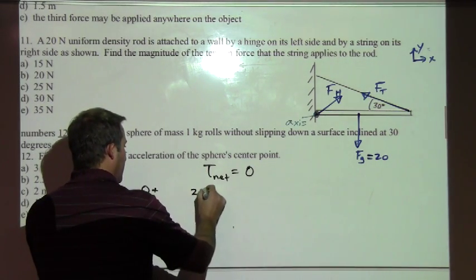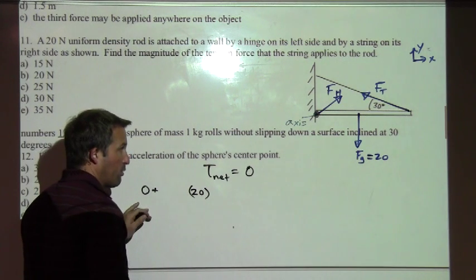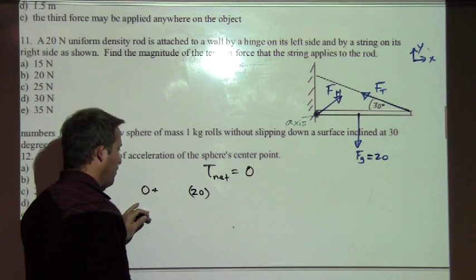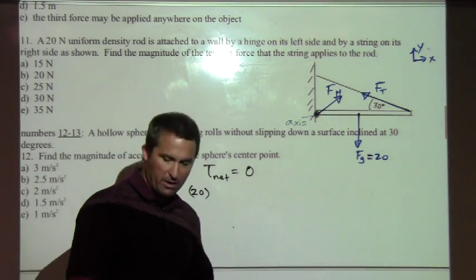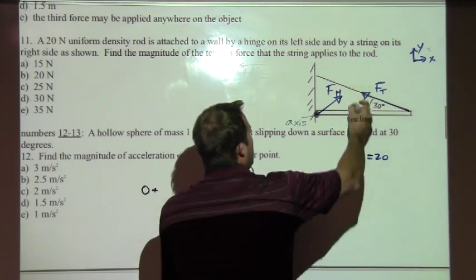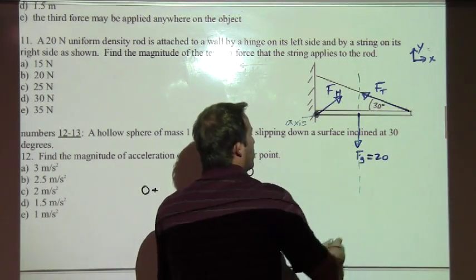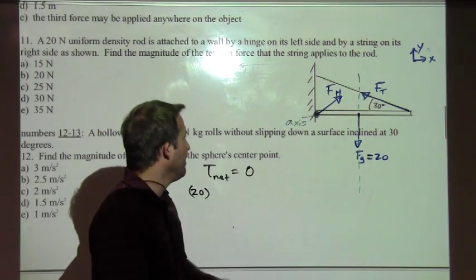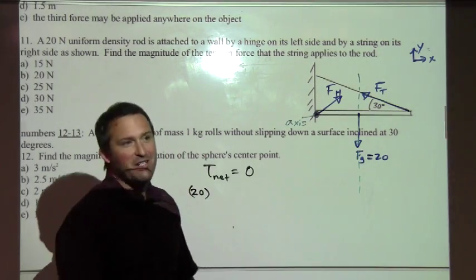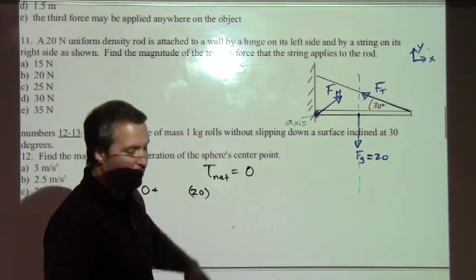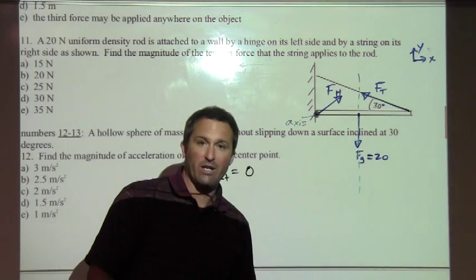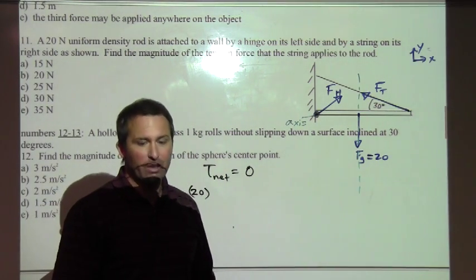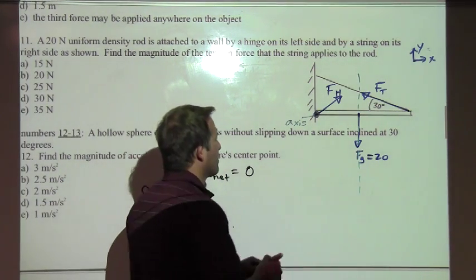And so we've got our 20 Newton gravitational force. And the lever arm distance, the shortest distance between that line and the axis point, actually, it's not even given because it doesn't tell you how long the rod is. So what do we do when it's not given? Well, after a brief moment of panic, we just say...